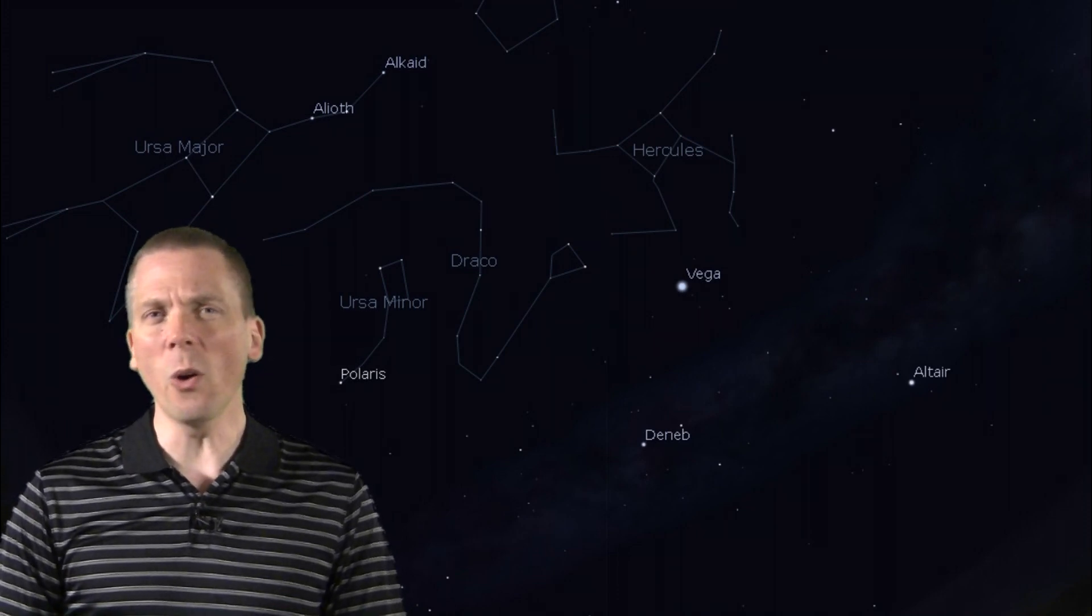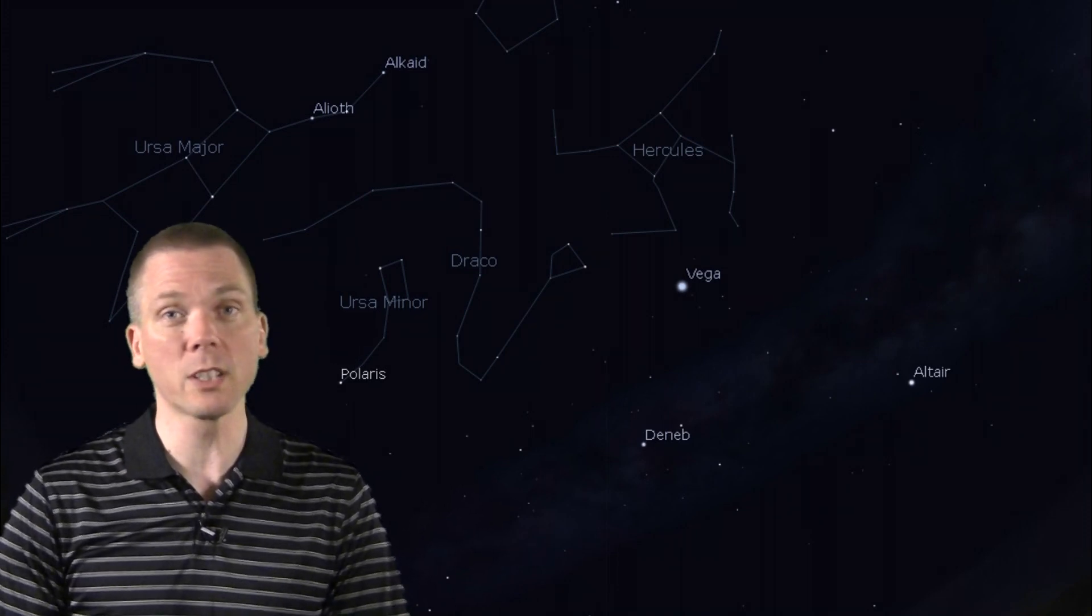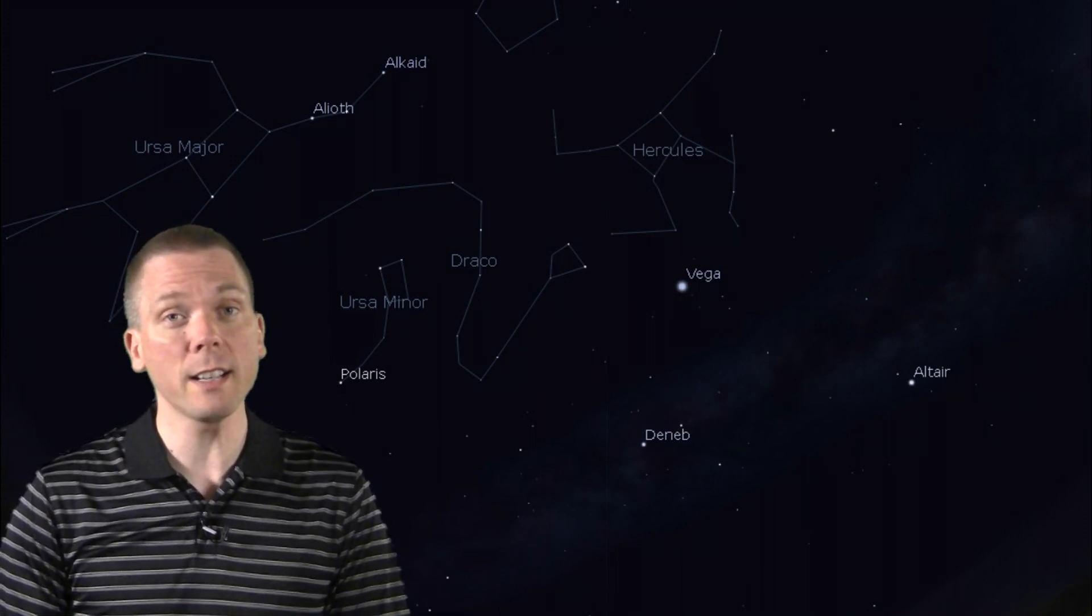Just beyond the head of the dragon lies Hercules, one of the largest constellations in the sky by area, yet only glowing weakly from urban and suburban areas due to its brightest stars largely in the 3rd magnitude range.